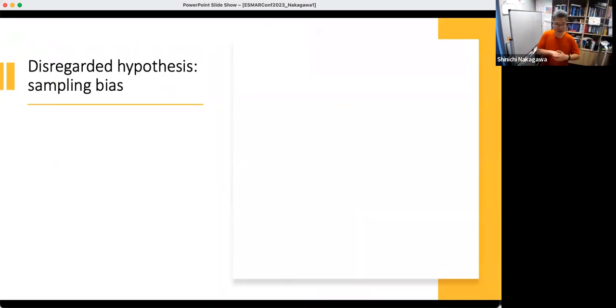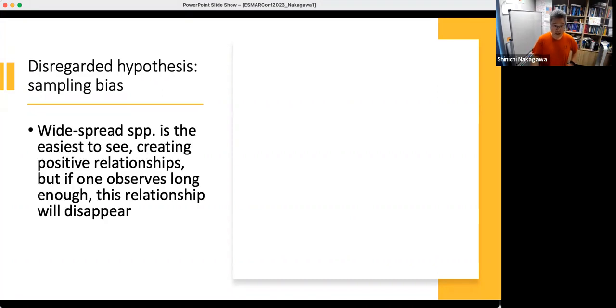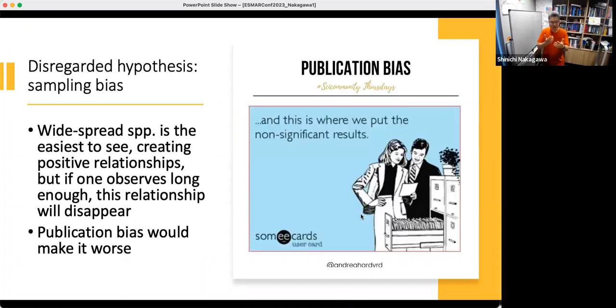However, if you read related literature, there's a disregarded hypothesis. The easiest explanation of this abundance-occupancy relationship is sampling bias. The sampling bias hypothesis, even though disregarded or rejected in the literature, states widely spread species are easiest to observe because they're most widespread. If you go around in a survey in the area, you see this first. But if you actually exhaustively observe that one area, this relationship would disappear. Also, in the current published literature, there might be publication bias. People may only be publishing strong correlations. So overall, what we saw in the meta-analysis, this 0.6, seems too high.